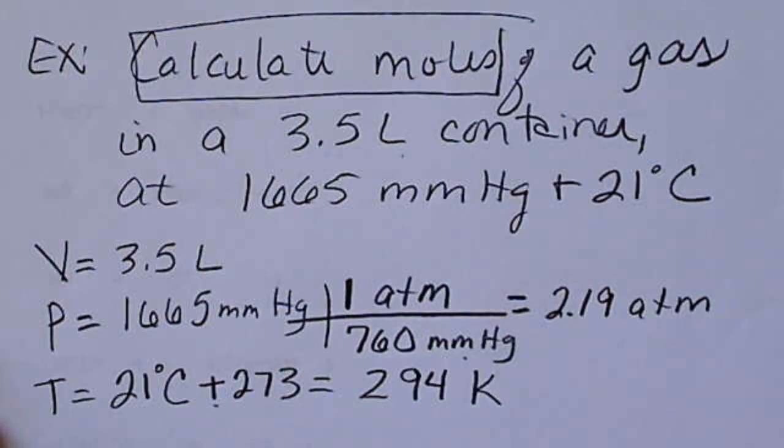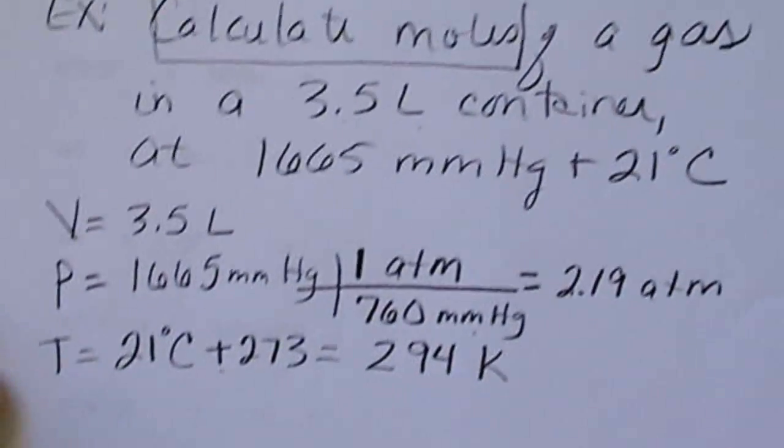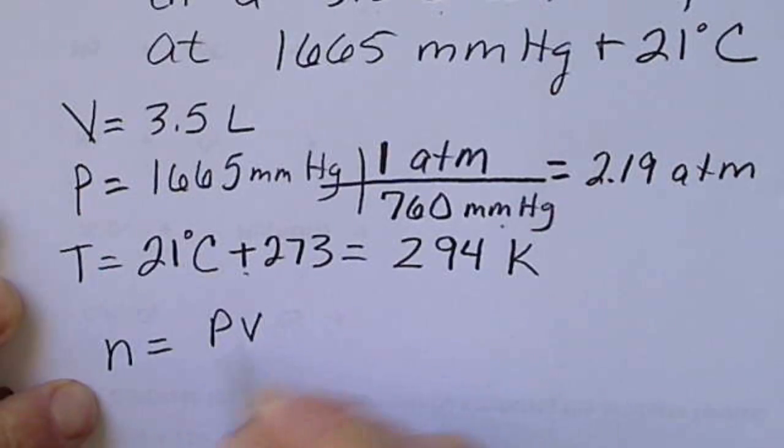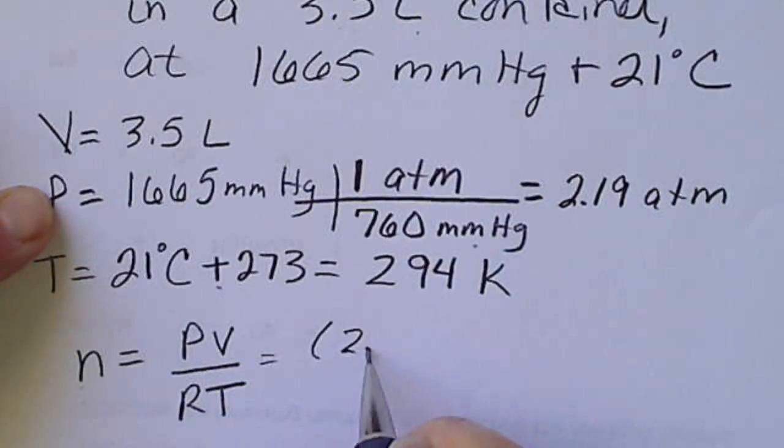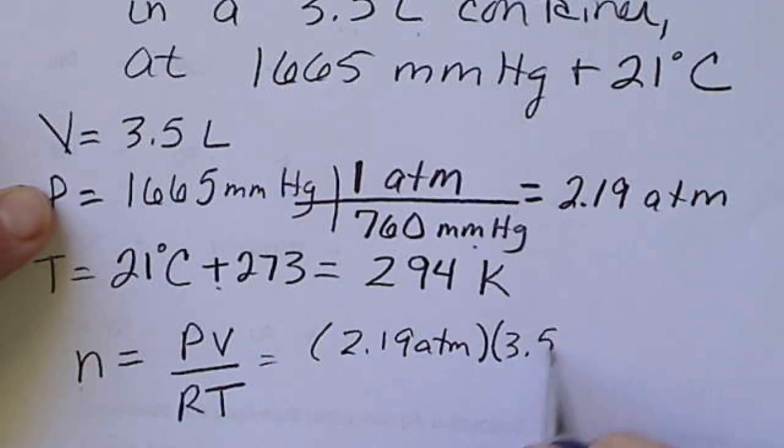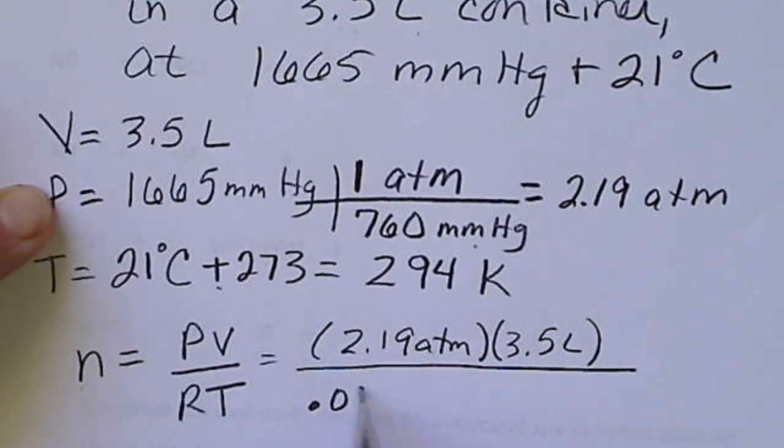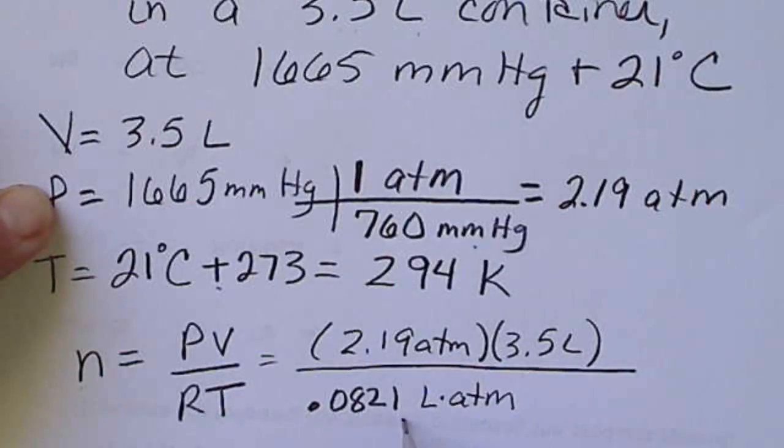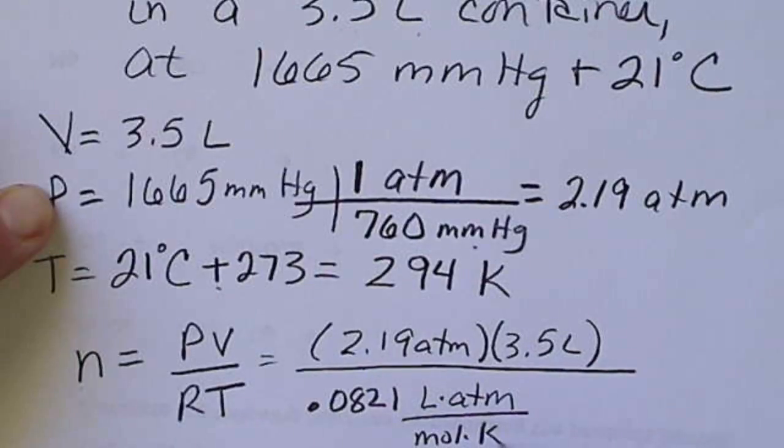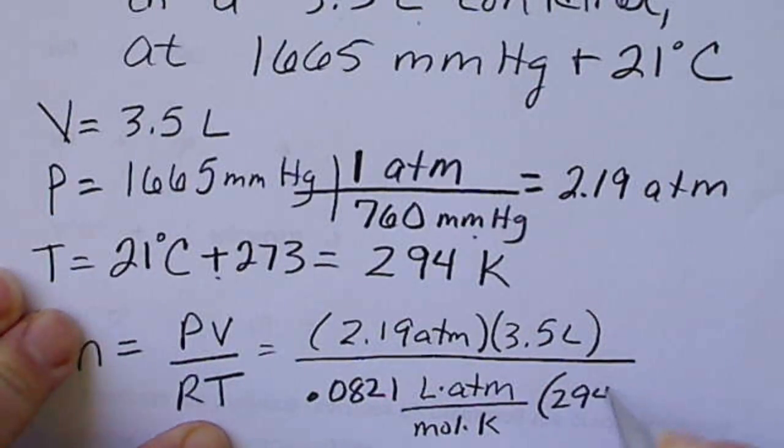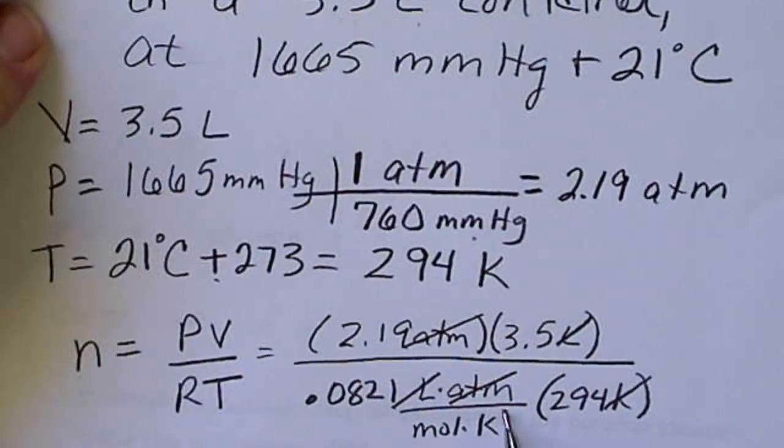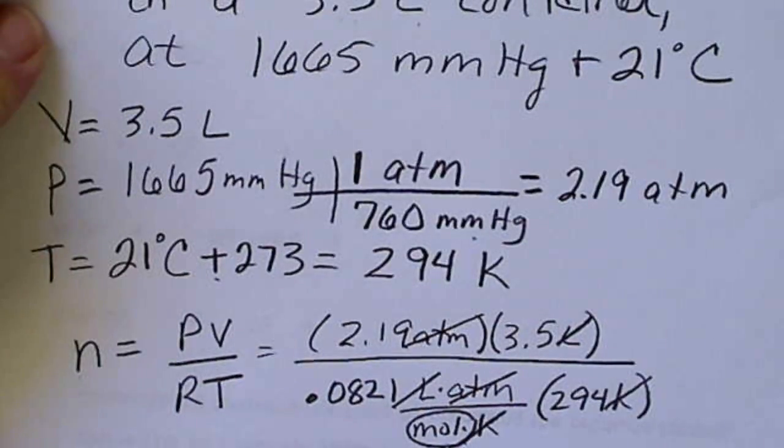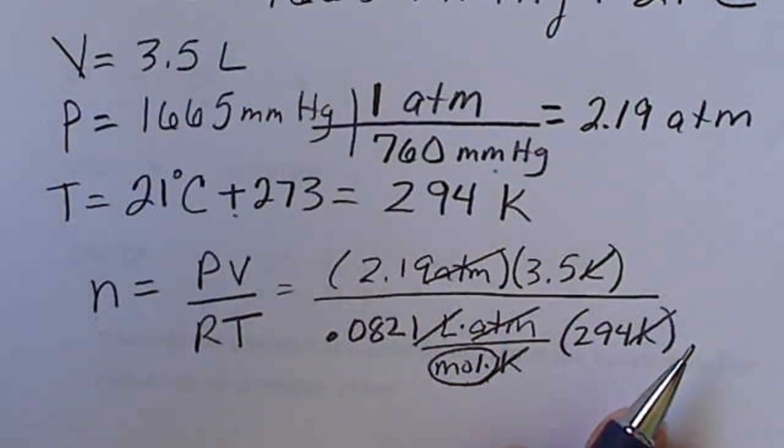And since this says to calculate the moles, we need to solve for n. So we're going to write the ideal gas law. PV divided by RT allows us to calculate for n, and we plug in these units. So pressure is 2.19 atmospheres. Volume was 3.5 liters. R is that constant, 0.0821, and it has all four units here: a liter times an atmosphere per mole per degree Kelvin. And then we're also going to have the temperature, T, in the denominator, and our temperature is 294 degrees Kelvin. And the units are all going to cancel. That atmosphere cancels, the liters cancel, and the degrees Kelvin cancel. The only unit left is the mole, and it's in the denominator of a denominator, so that actually turns into a numerator.